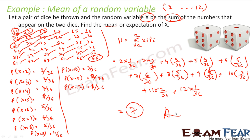It's not that difficult, but it is a little lengthy. You have to find all the values of x from 2 to 12, find the probabilities for all those values, and then multiply and add.